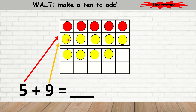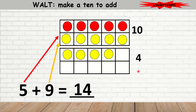Remember, when you have the 10-frame, you have to fill in the first 10-frame before you go to the second one. Now I've made a 10. I have made 1 ten. And then I have 1, 2, 3, 4 in the second 10. So 10 plus 4 is 14. Therefore, 5 plus 9 is equal to 14.